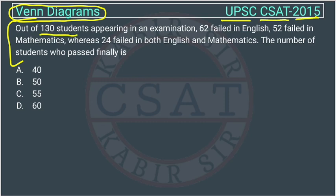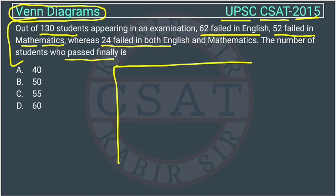Out of 130 students appearing in an examination, 62 failed in English, 52 failed in mathematics, whereas 24 failed in both English and mathematics, the number of students who passed finally. We have to find the number of students passed.